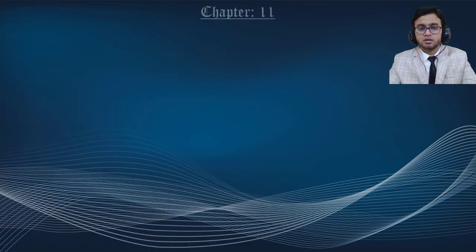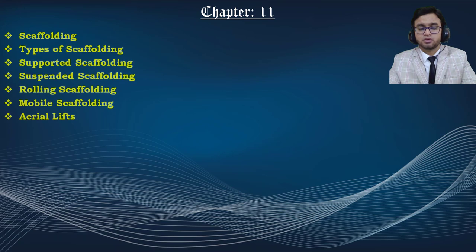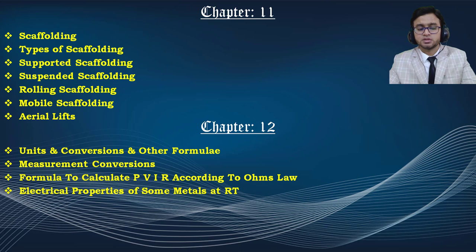In chapter 11, we discuss scaffolding. Scaffolding is a vertical structure generally provided for elevated work. There are five different types of scaffolding, and all of them are discussed in detail.